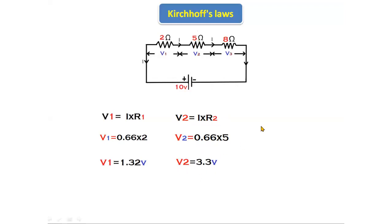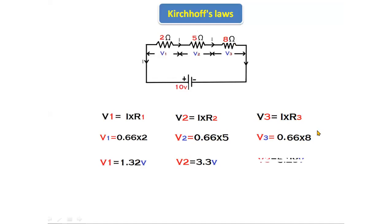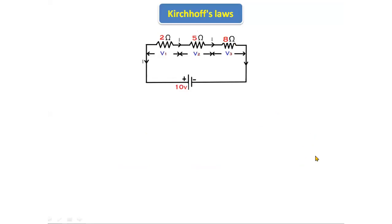Next, V3 equals I into R3. I value is 0.66 amperes and R3 is 8 ohms. Substituting those values, V3 equals 0.66 into 8, giving V3 equals 5.28 volts. So V1 is 1.32 volts, V2 is 3.3 volts, and V3 is 5.28 volts.